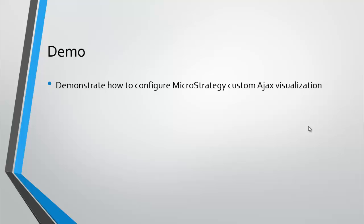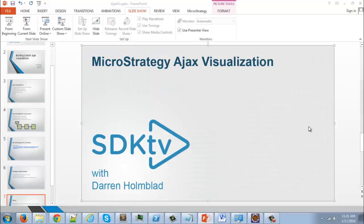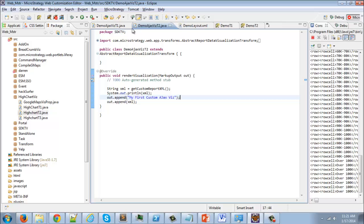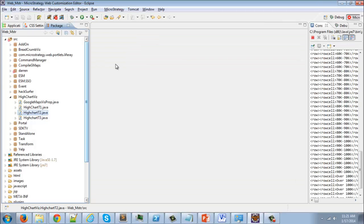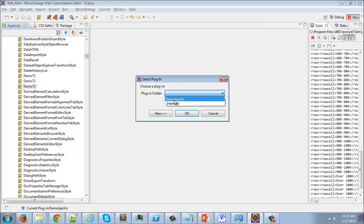Now we're going to go over a demonstration of how to set up your custom AJAX visualization. The demonstration today is not going to integrate any third-party API or utilize any JavaScript — it's really just a demonstration of how to get the custom visualization set up so you can see the data flow through the visualization and see the output on MicroStrategy Web. Like any MicroStrategy customization, we're going to go into the Web Customization Editor and generate a new plugin.